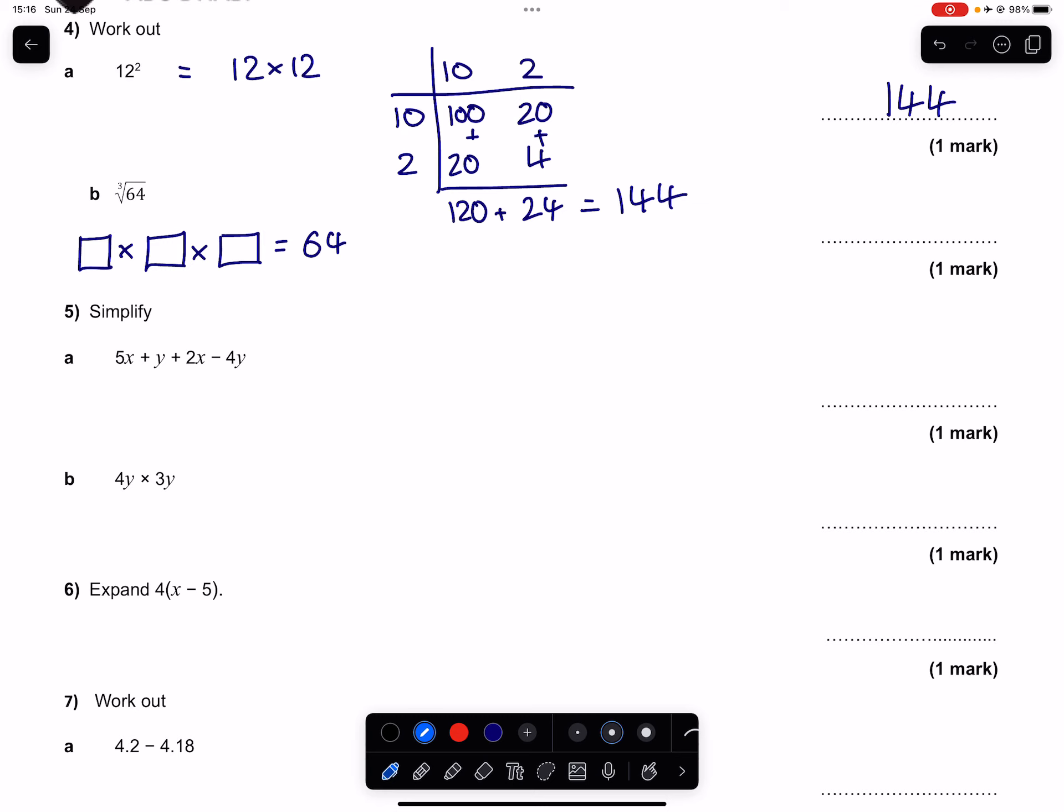You can guess your way to the answer by first trying 2. If you multiply three 2's together you're going to end up with 8. If you multiply three 3's together you're going to end up with 27. And third time lucky, if you multiply 4 with 4 with 4 you get 64. So the cube root of 64 is 4.